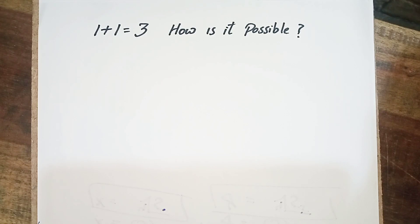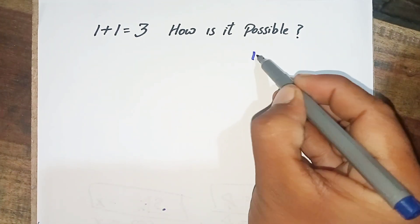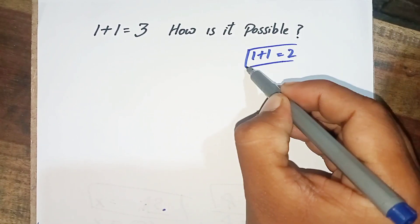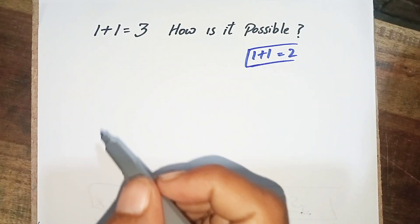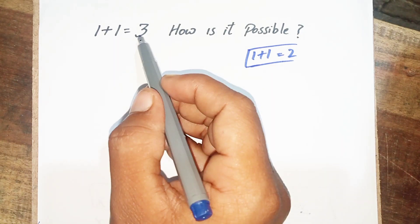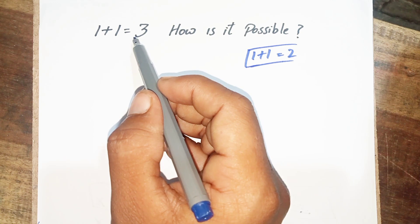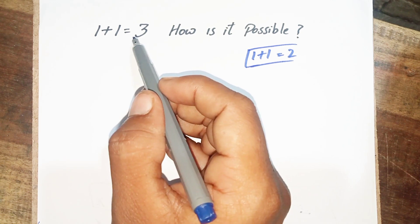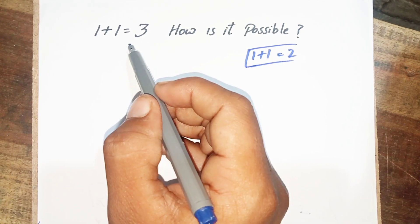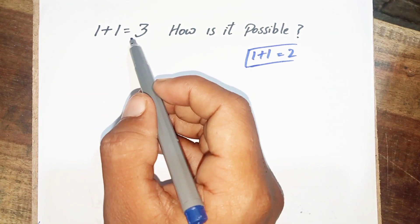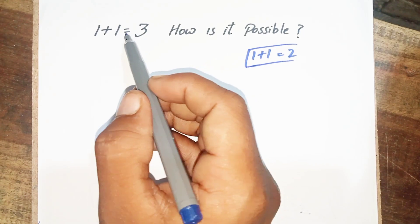Hello students, today our topic is 1 plus 1 which is equal to 3. How is it possible? 1 plus 1 is equal to 2 — that is proved mathematically — but my topic is 1 plus 1 is equal to 3. If you are a genius, a math teacher, find out my fault and write in the comment section my mistake in this lecture.